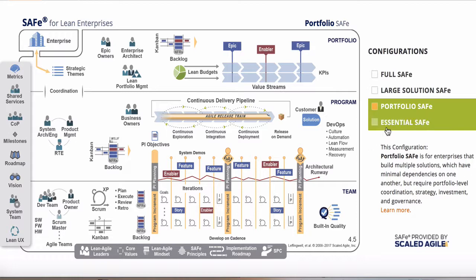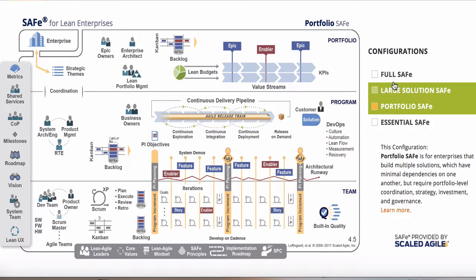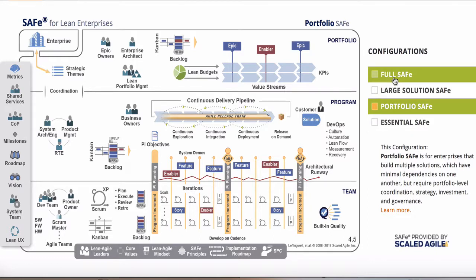So SAFe 4.5 creates four flavors of SAFe to make the tailoring decisions easier. You just choose the configuration that's right for you, and you'll only see as much of the model as you need. Your configuration choice is then remembered for the next time you visit scaledagileframework.com.